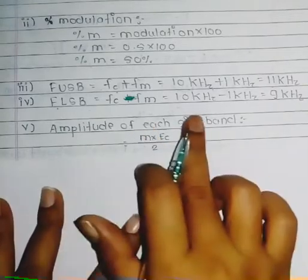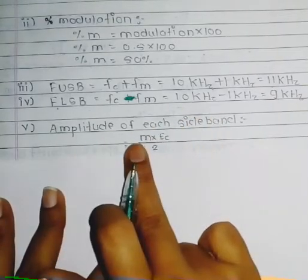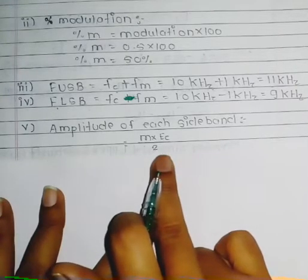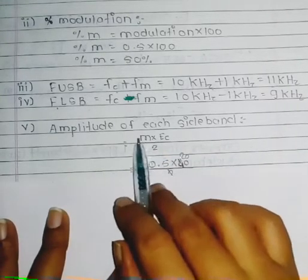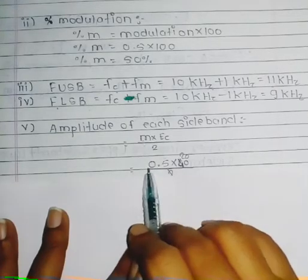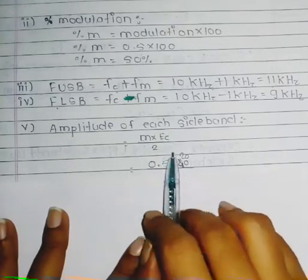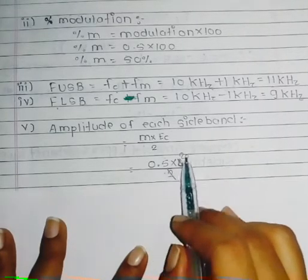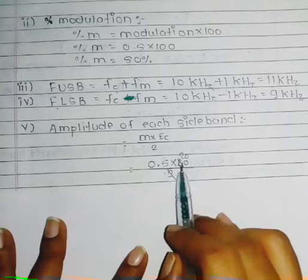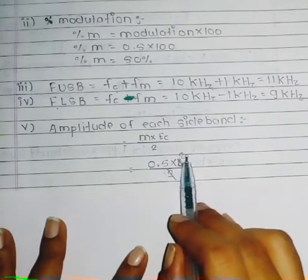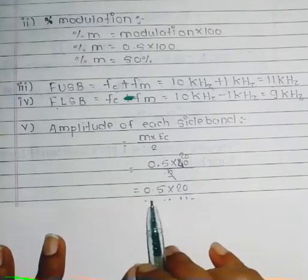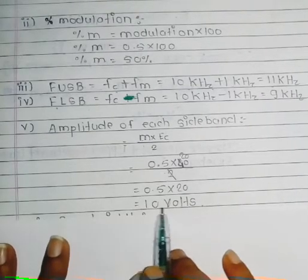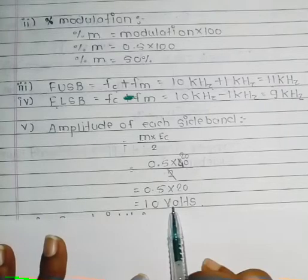The amplitude of each sideband is given by the formula M × Ec / 2. Substituting values: 0.5 × 40 / 2 = 20 / 2 = 10. So the amplitude of each sideband is 10 volts.